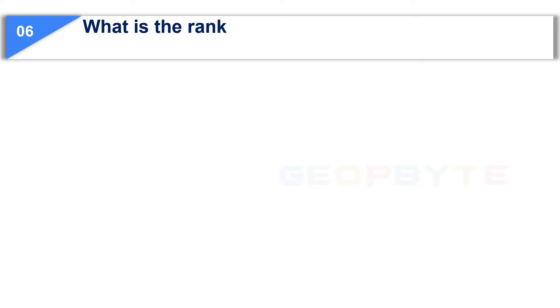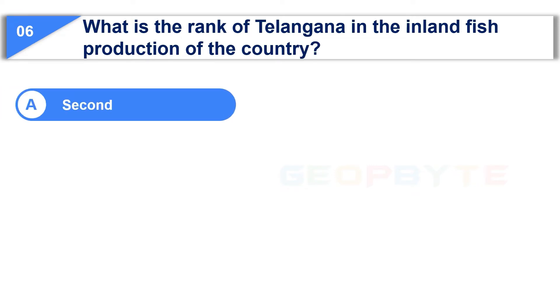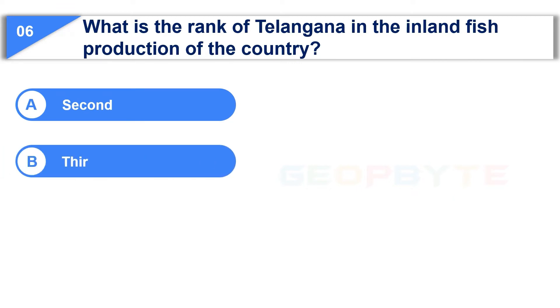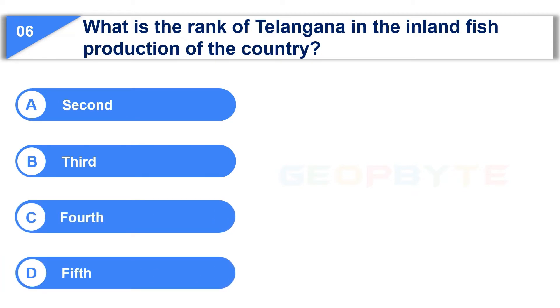The sixth question is: What is the rank of Telangana in the inland fish production of the country? Option A: Second. Option B: Third. Option C: Fourth. Option D: Fifth.